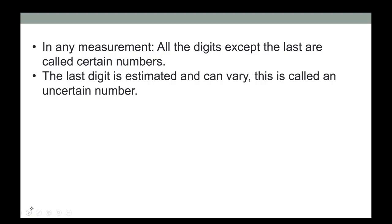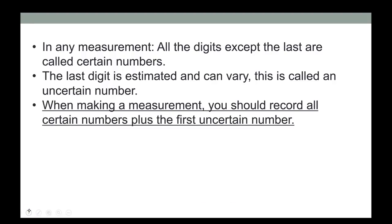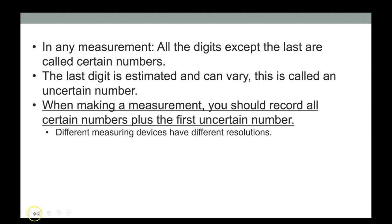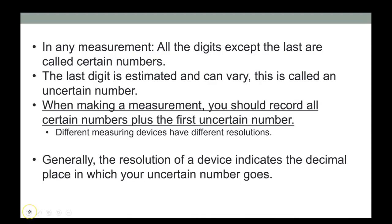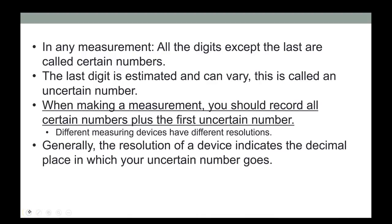Even a digital machine still estimates the last digit for you — it can vary — and that's called an uncertain number. When you make a measurement, record all the certain numbers plus the first uncertain number. Different measuring devices have different resolutions.